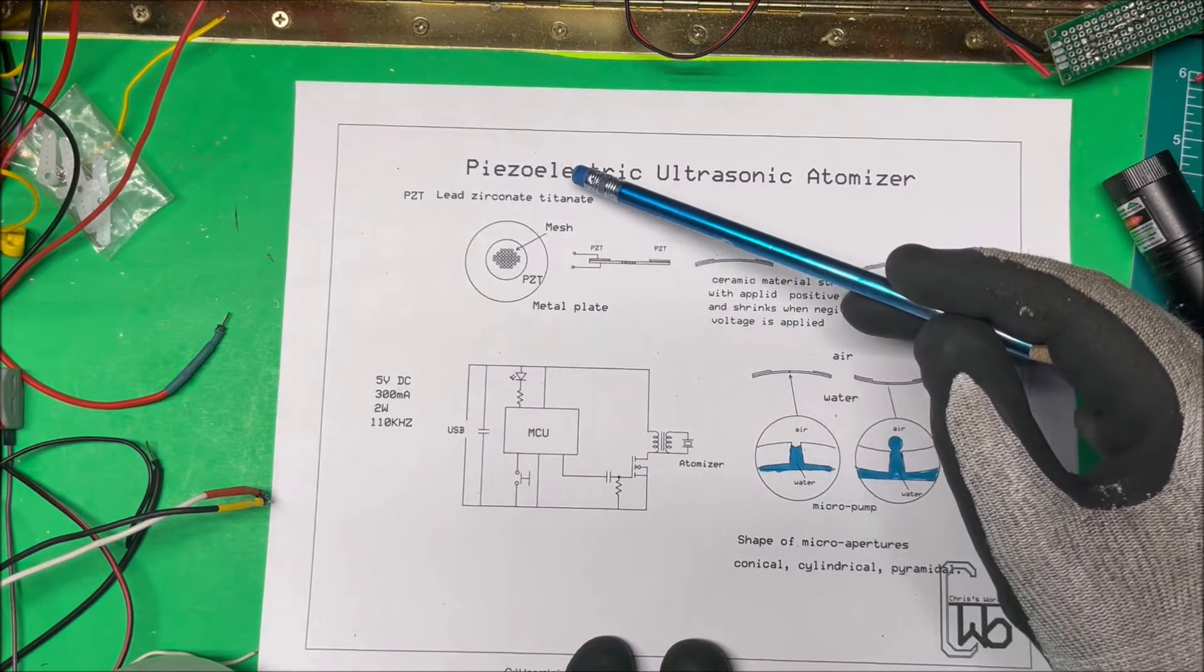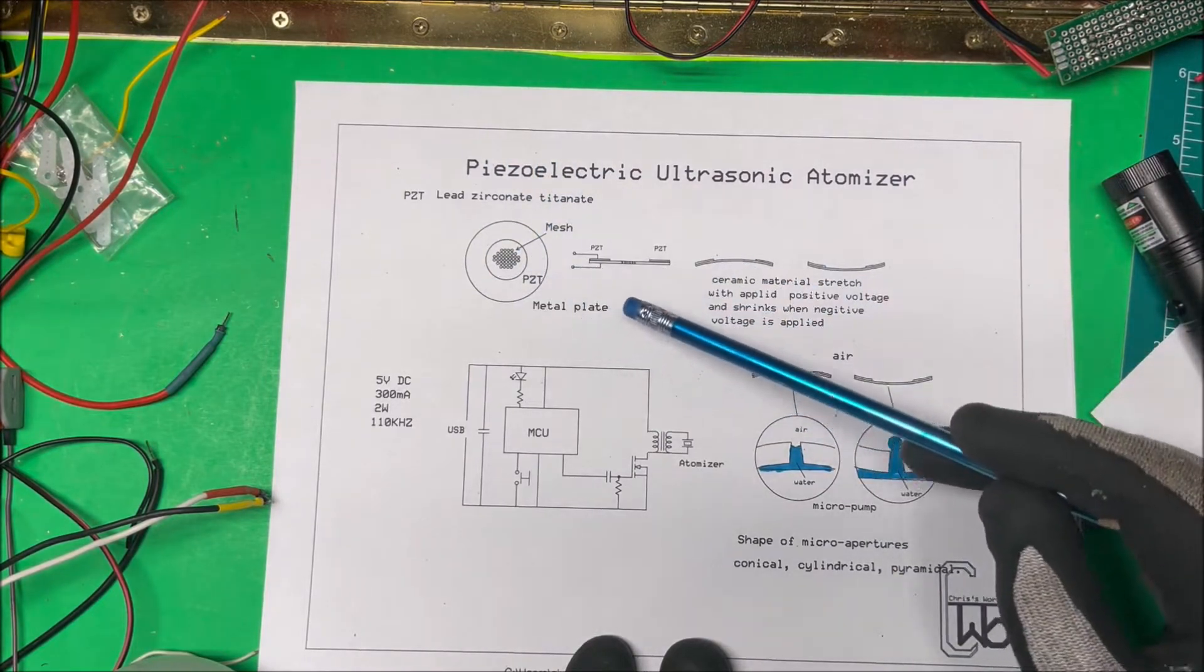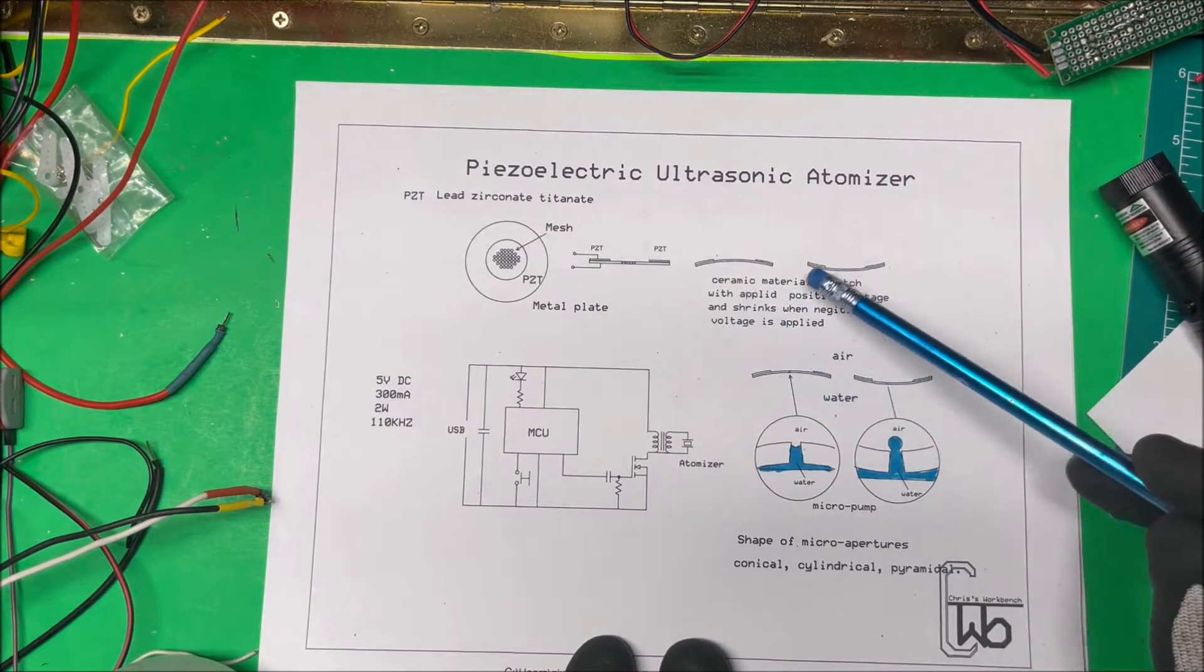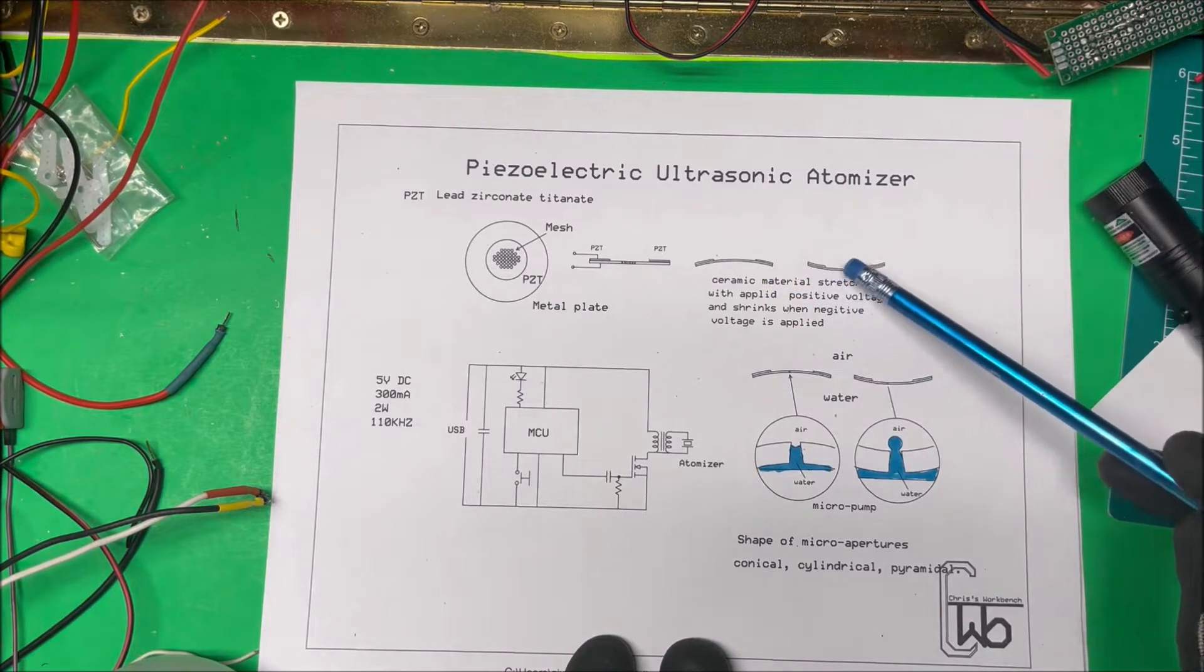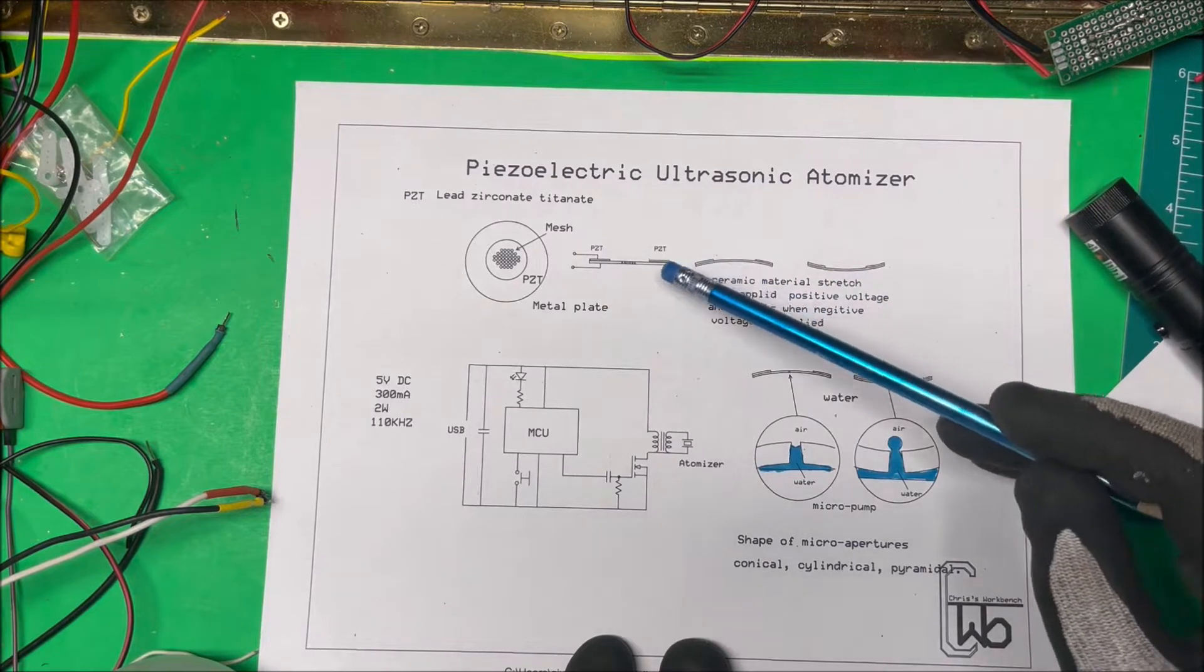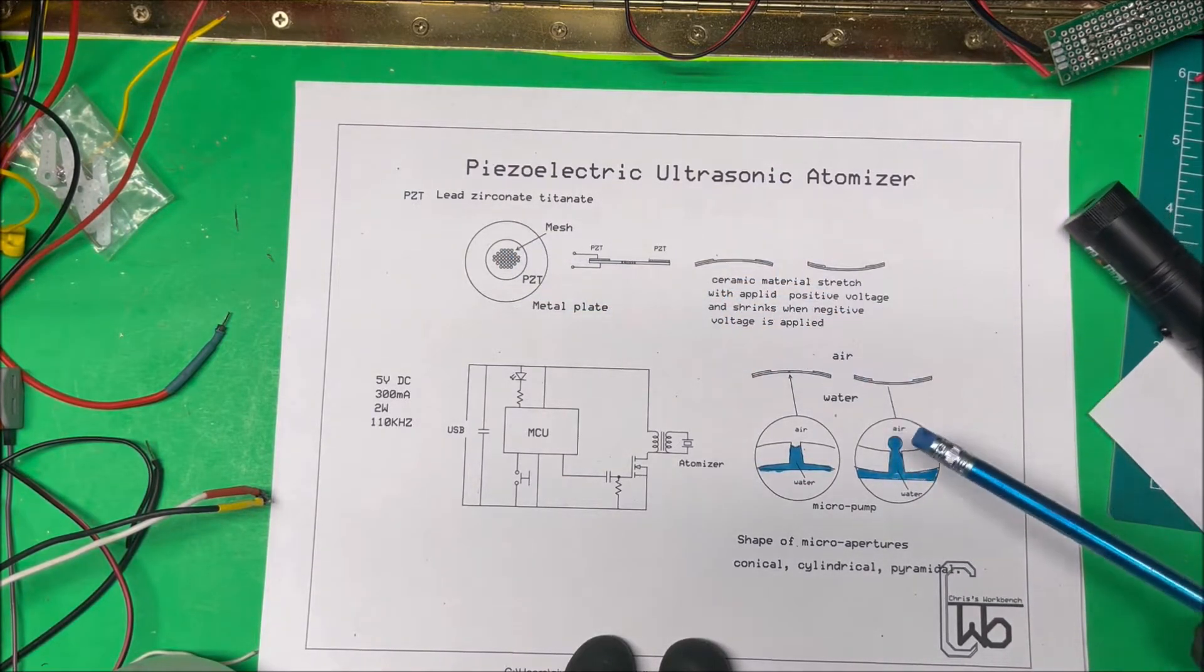It's a lead-zirconate titanate material around here, which is a ceramic material. What happens with this material is that as you apply voltage to it, a positive voltage will make it expand and the negative voltage will make it shrink up. So it forces this metal plate that it's on to vibrate back and forth.